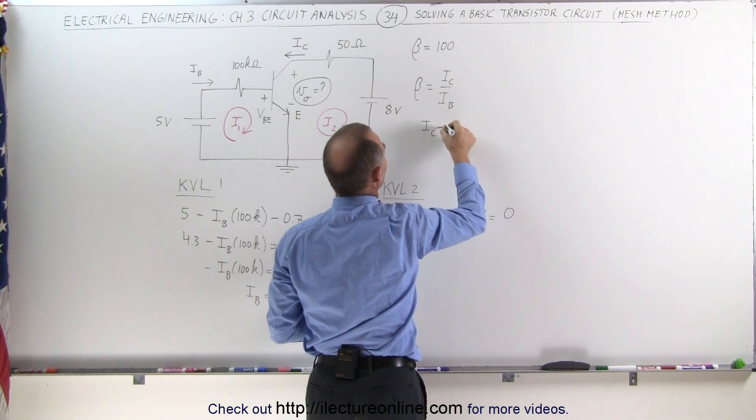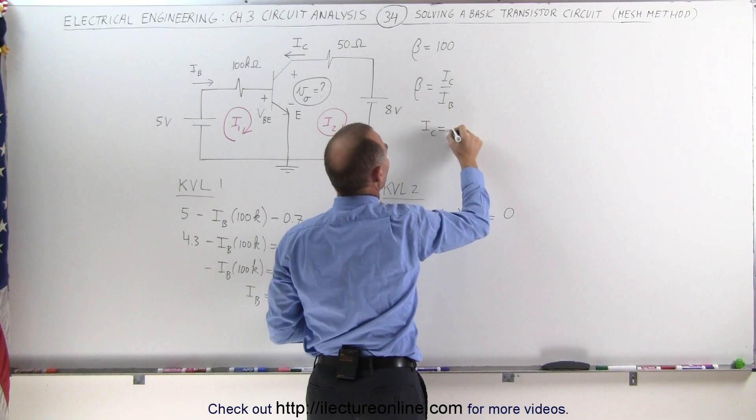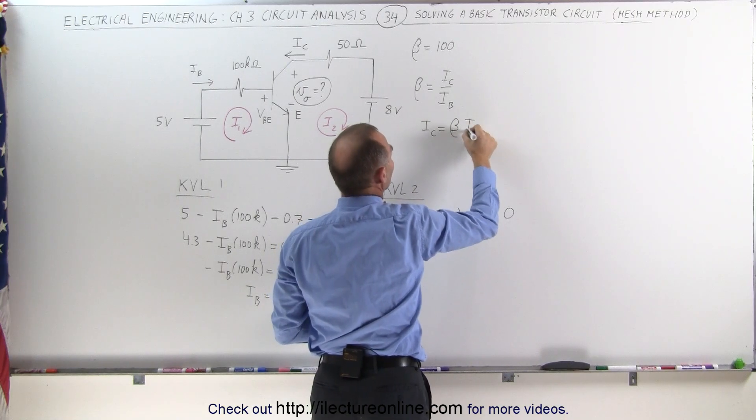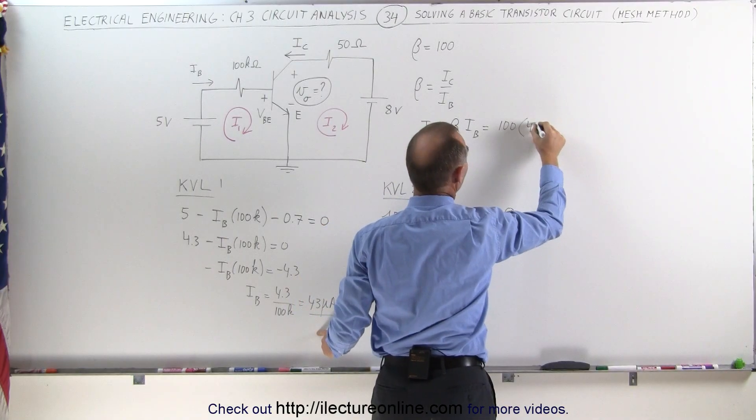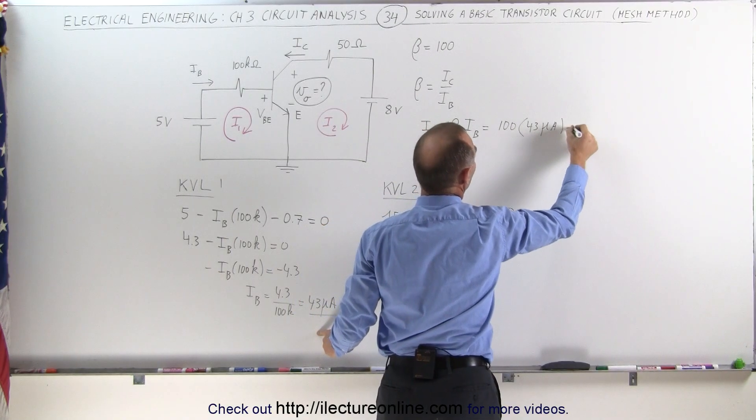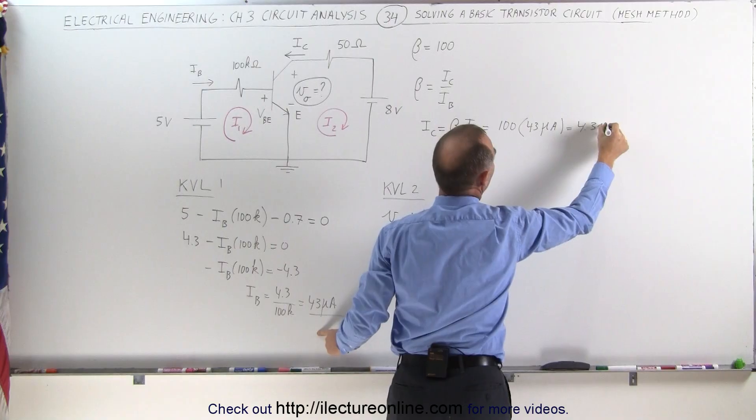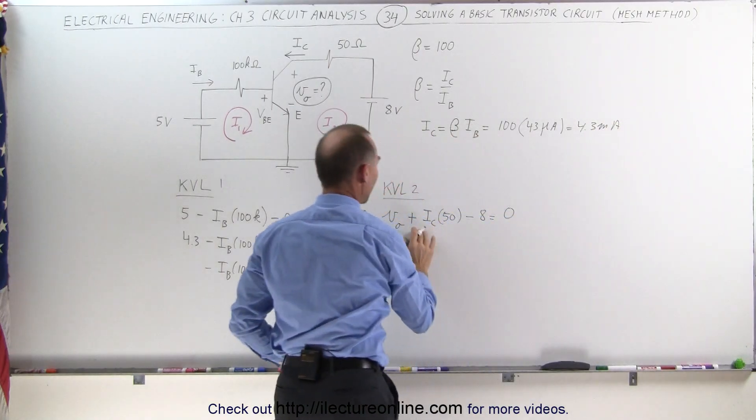Therefore, the collector current is equal to beta times the base current, which in this case is equal to 100 times 43 microamps, which is equal to 4.3 milliamps. So we can go ahead and plug that in here.